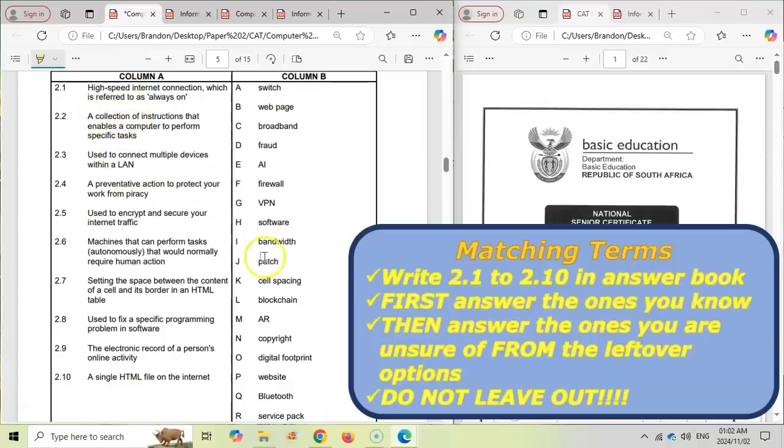Because what happens sometimes is sometimes you will try to figure out this answer and you'll say maybe it's this collection of instructions that enables your computer to perform a specific task. I think for me there's going to be software. But let's say you didn't know it was software. Let's say I'm not too sure about that. Maybe that's the switch.